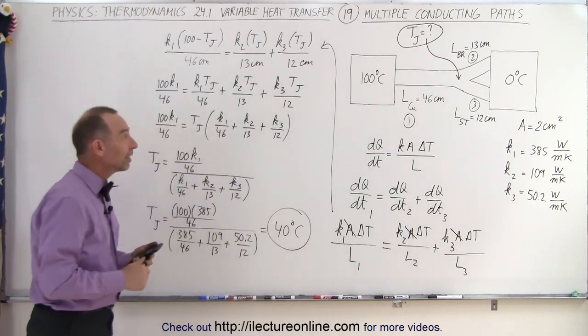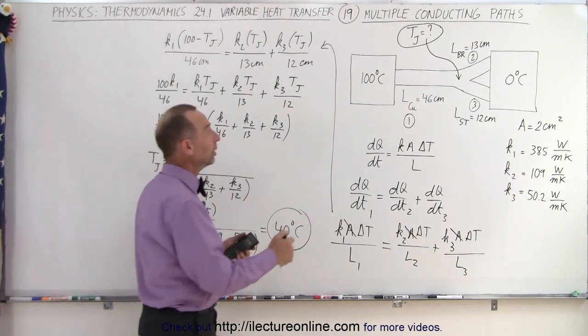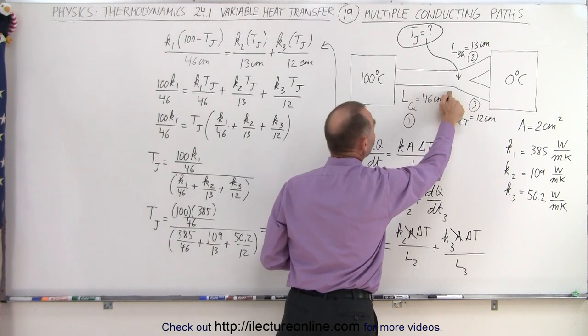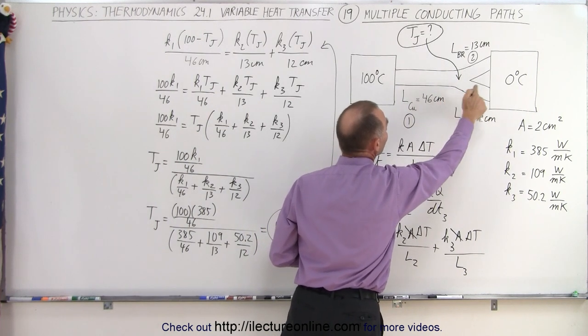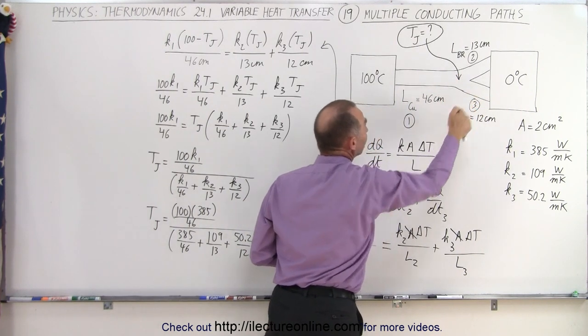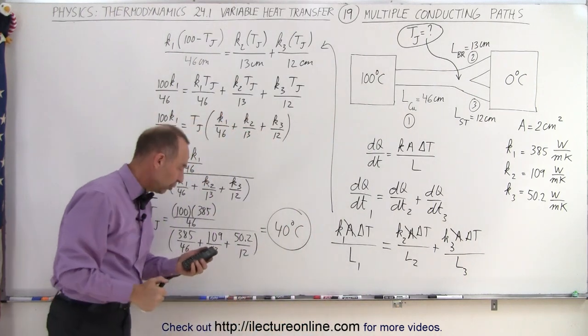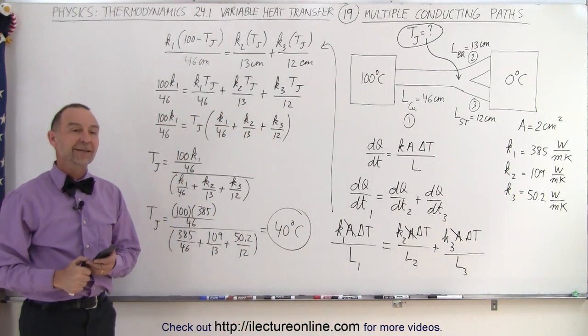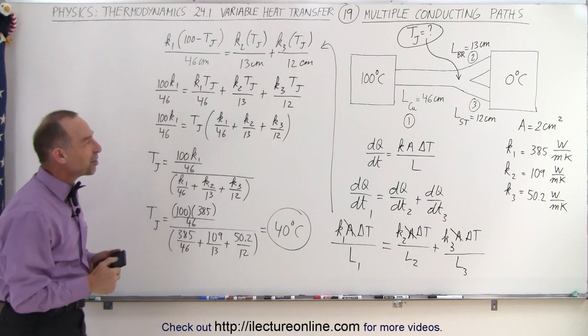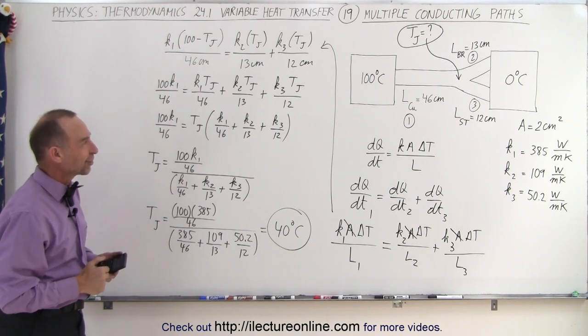So the temperature drop in path 1 is from 100 down to 40, and then from there it drops from 40 to 0 through paths 2 and 3. That's how we figured out the junction temperature.